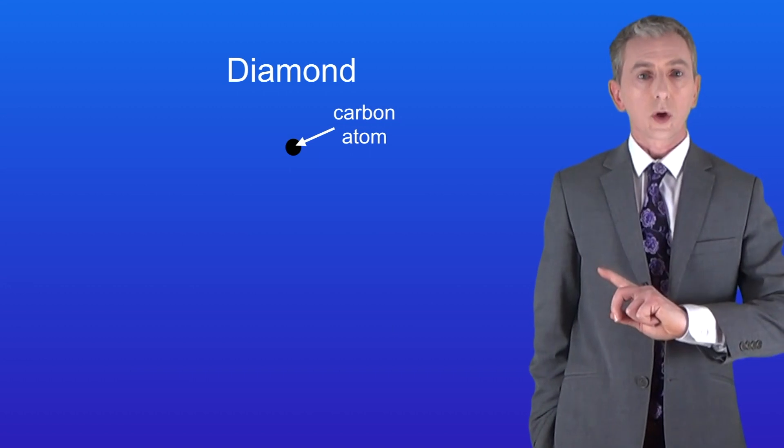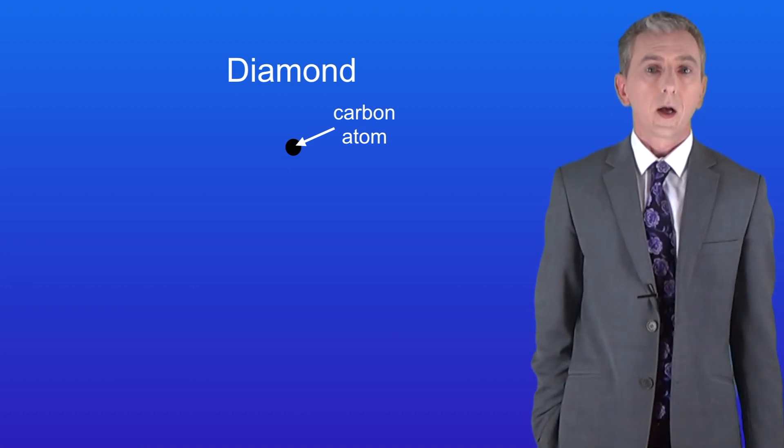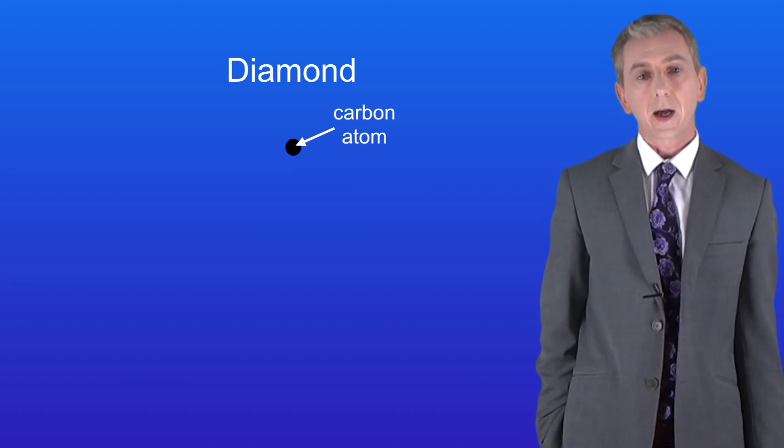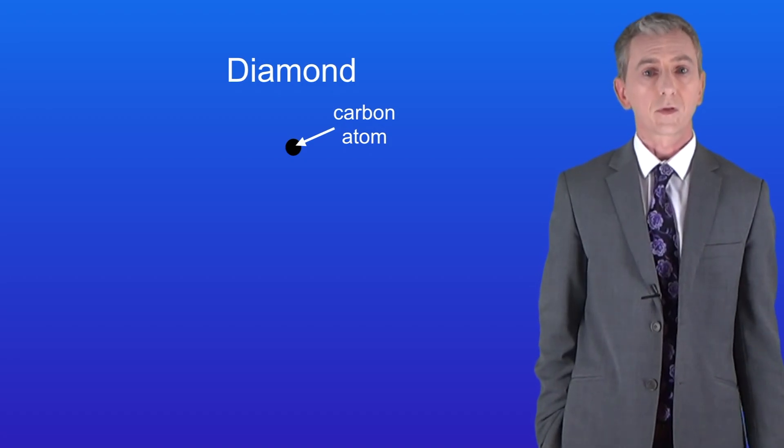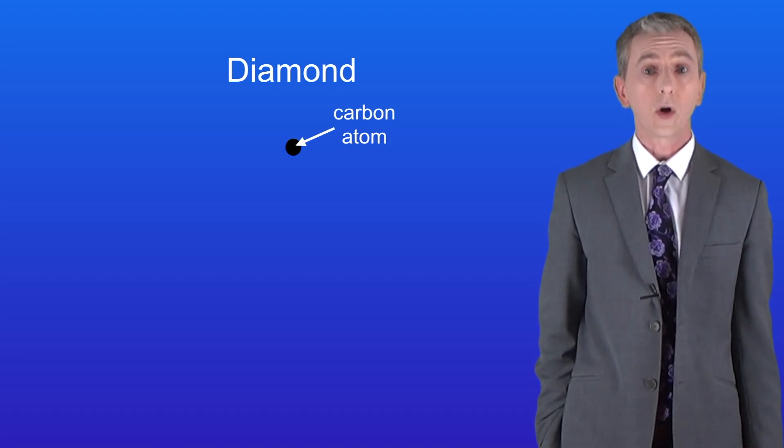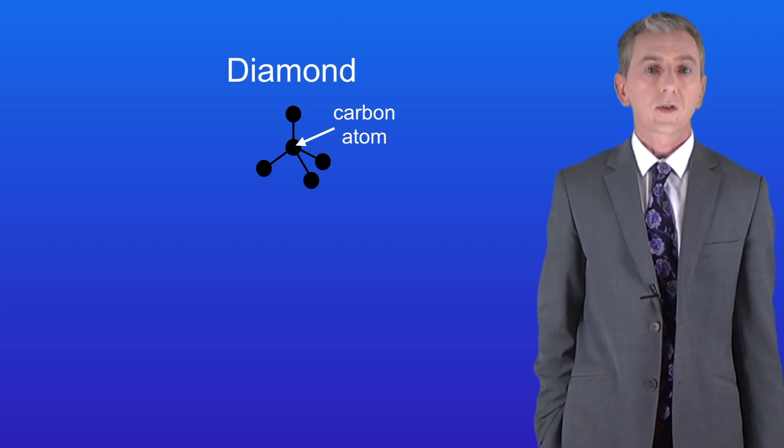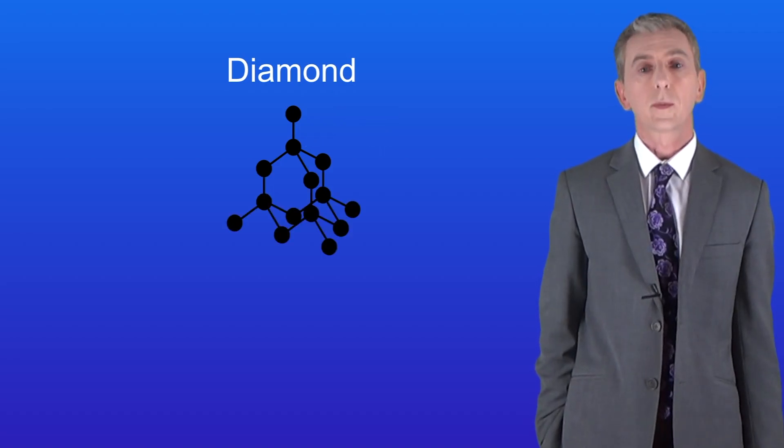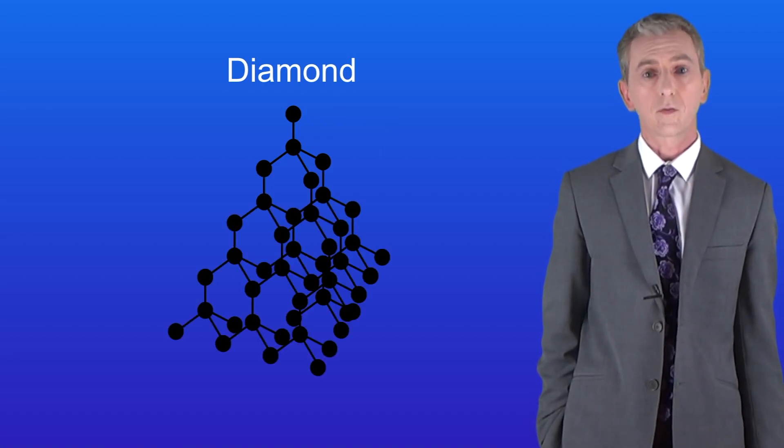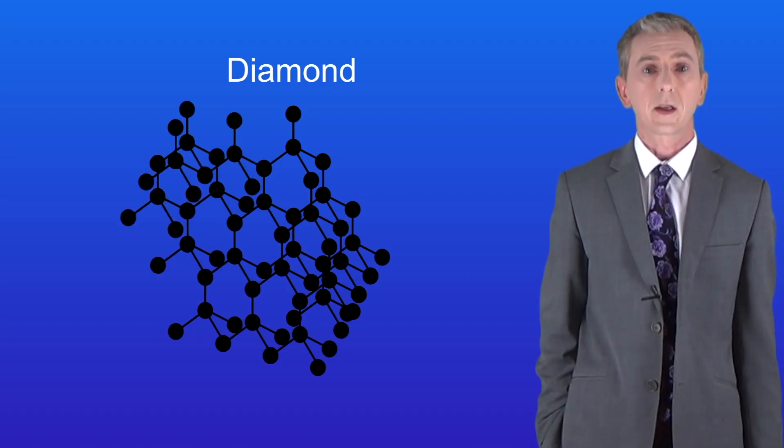So this shows a carbon atom. Now one essential fact is that in diamond each carbon atom forms four covalent bonds to four other carbon atoms. So here are the four covalent bonds between the carbon atoms. Now a single diamond contains a huge amount of carbon atoms joined by covalent bonds and I'm showing you that here.